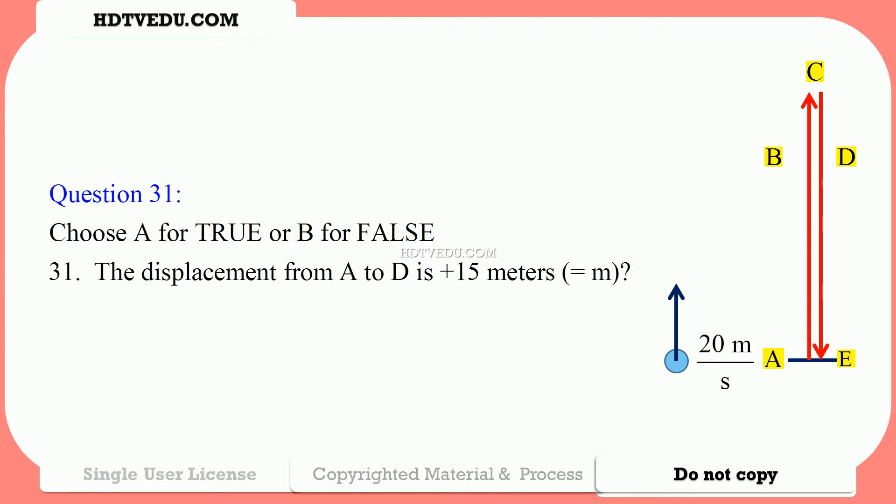Question number 31. Choose A for true, B for false. The displacement from A to D is positive 15 meters. Where are we at point D, as in David? We are 15 meters above point A. The origin is at point A. So the displacement between point A and point D is 15 minus 0, which is positive 15. That means point D is 15 meters above point A.